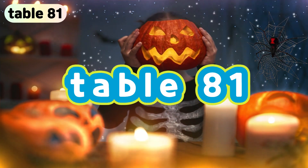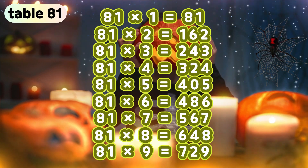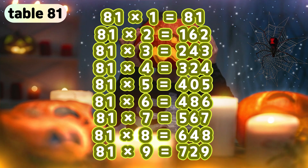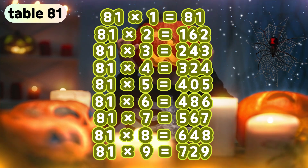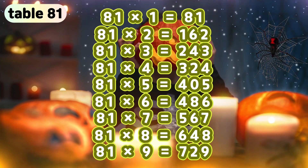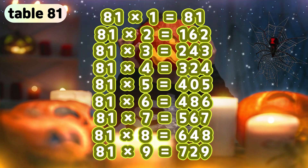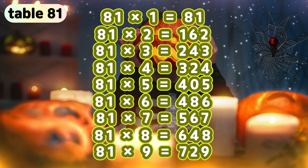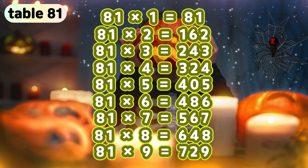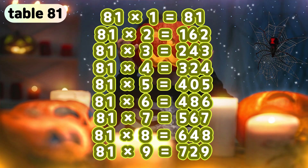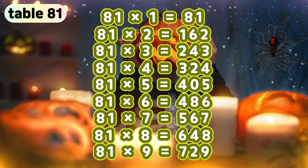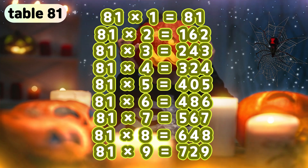Table 81. 81 times 1 is 81. 81 times 2 is 162. 81 times 3 is 243. 81 times 4 is 324. 81 times 5 is 405. 81 times 6 is 486. 81 times 7 is 567. 81 times 8 is 648. 81 times 9 is 729.